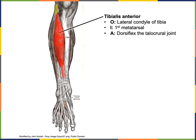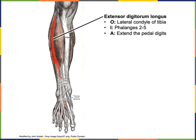The origin of tibialis anterior is the lateral condyle of the tibia; the insertion is the first metatarsal; and the action is to dorsiflex the talocrural joint. The origin of extensor digitorum longus is also from the lateral condyle of the tibia; the insertion is onto phalanges two through five; and the action is to extend the pedal digits.